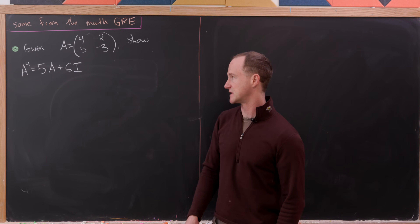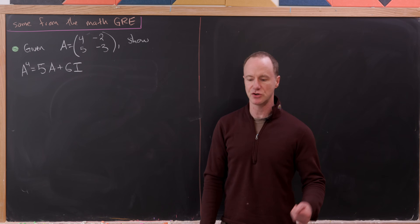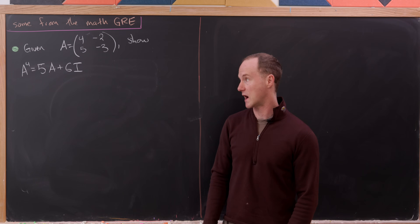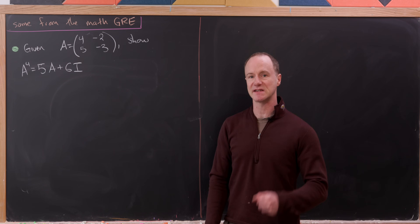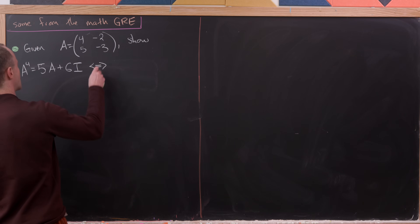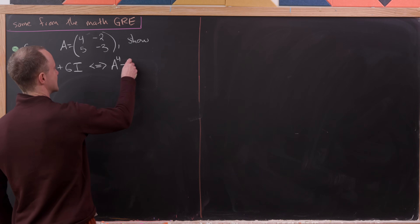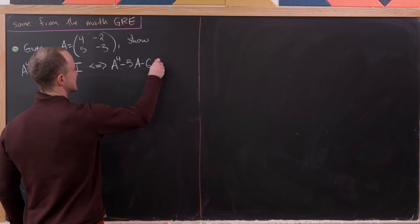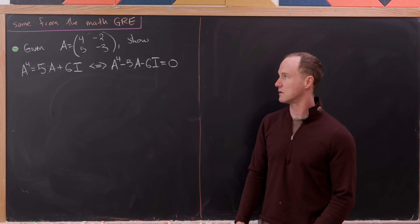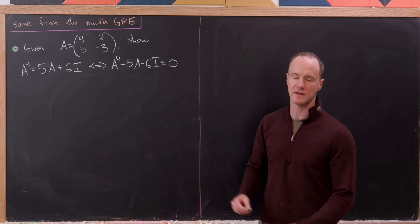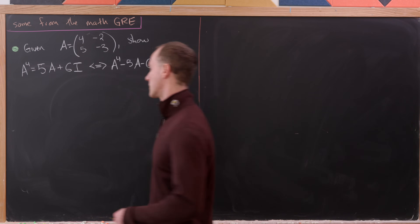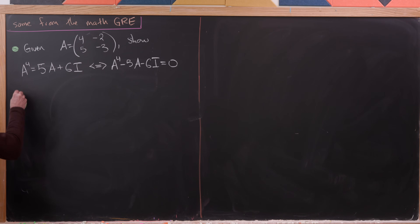Our next problem is a linear algebra problem. We're given the 2×2 matrix A = [[4, −2], [5, −3]] (row-wise), and we want to show that A⁴ = 5A + 6I, or equivalently that A⁴ − 5A − 6I = 0. We could compute A⁴ directly, but the trick is to first look at the characteristic polynomial.